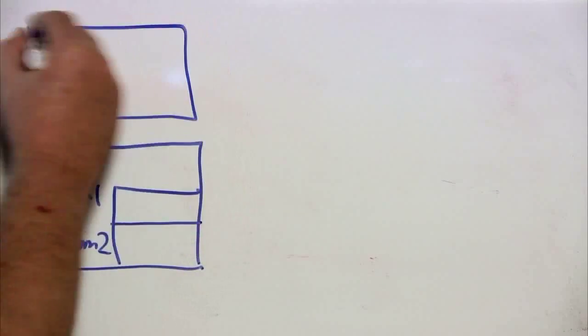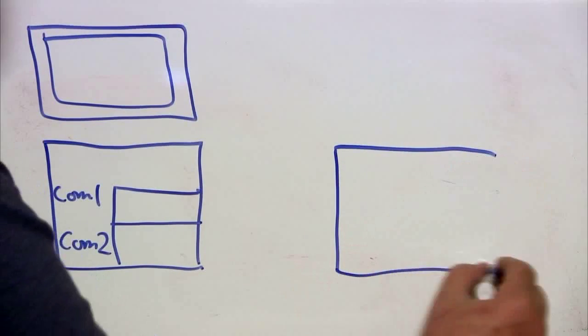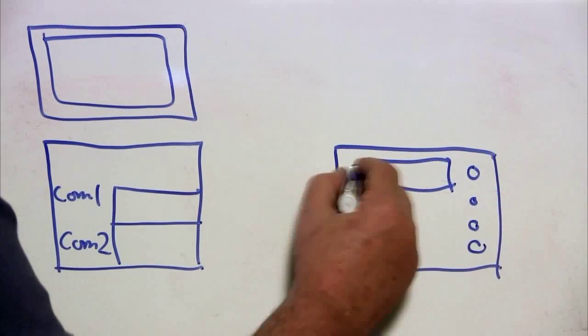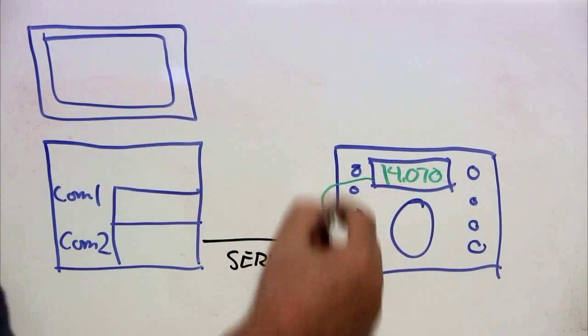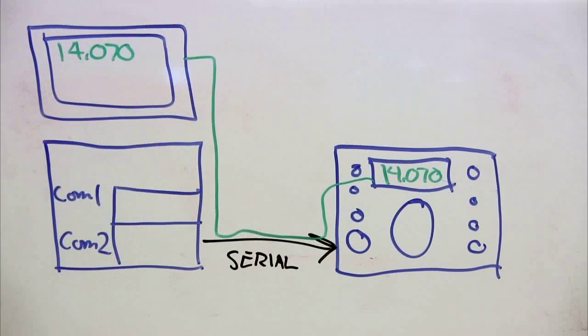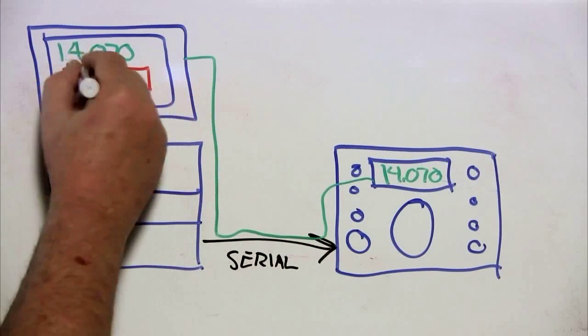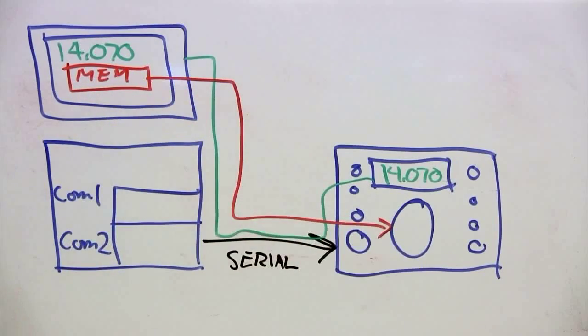The rig control connection from the computer to the radio allows your software in the radio to read things like the frequency display in order to log properly. It may also provide a button that you can press to change the frequency or change bands. This requires a second serial port in addition to the one for the push-to-talk.